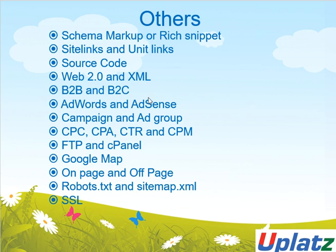B2B and B2C are two kinds of business: business to business and business to client. AdWords and AdSense: AdWords is paid promotion by Google. Paid promotion by AdWords is of two types: search and display. The display ad is a form of AdSense — when I take AdWords for the display network, then for someone it is AdSense. Inside AdWords we make campaigns and ad groups, and define CPC, CPA, CTR, and CPM. CPC means cost per click, CPA means cost per acquisition, CTR is click-through rate, and CPM is cost per thousand impressions.